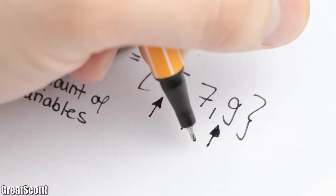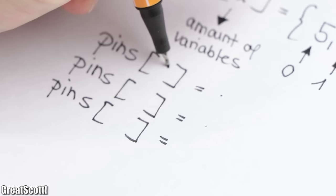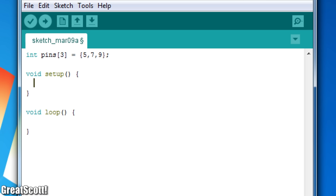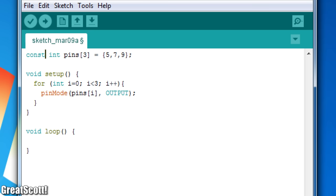And the numeration of the individual variables always starts with a 0. So by inserting the number of the required variable in the square brackets, we can select them individually. This way, by using a for loop which counts from 0 to 2, we can define them all as an output without repeating the same line over and over again. And while we're at it and don't want to change the pin variables later on, we can change the integer type to a constant integer type.